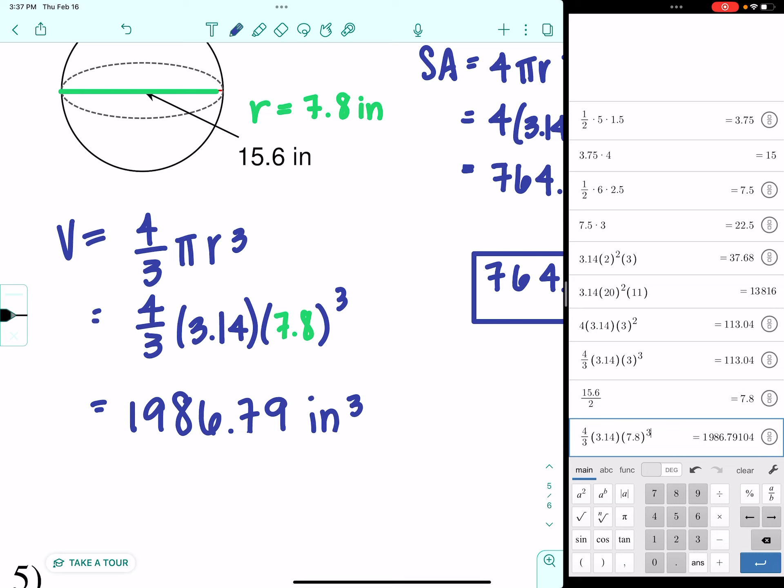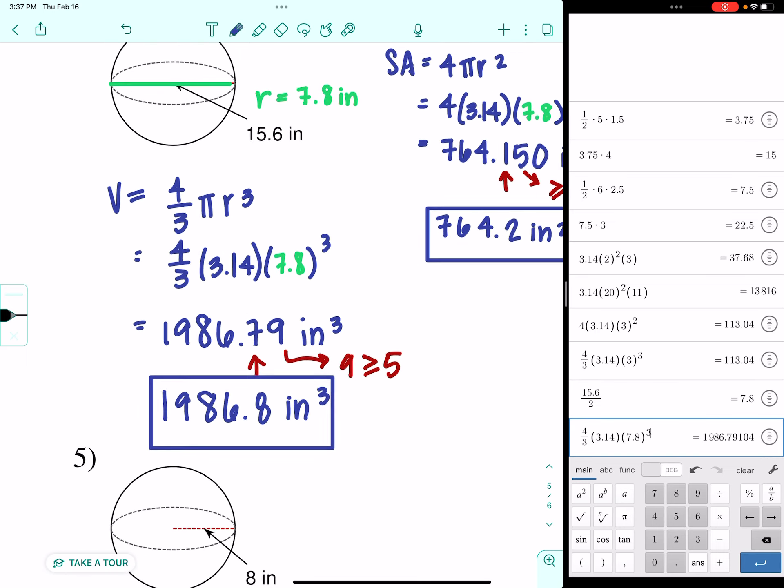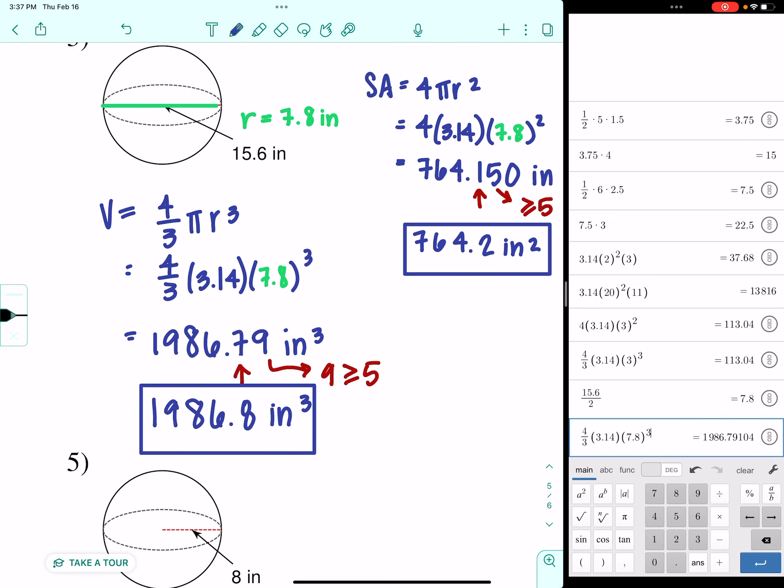Okay so we have 1,986.79 inches cubed but we're not finished we have to round to the nearest tenth. That's one place behind the decimal so we're going to look at the nine. Nine is greater than or equal to five so that means we bump the seven up to an eight. So if we were to inflate that particular ball we would need 1,986.8 cubic inches of air.